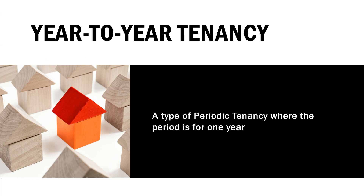Y is for year-to-year tenancy. This is an example of a periodic tenancy — a tenancy from period to period — where it is not for a definite period of time. Every time the tenant pays the rent and the landlord accepts it, they're essentially renewing the lease for another period. A year-to-year tenancy means your lease is for one year, then you renew for another year, with no definite end. To terminate a year-to-year lease, I have to give a 60-day notice. For month-to-month, it's a 30-day notice.